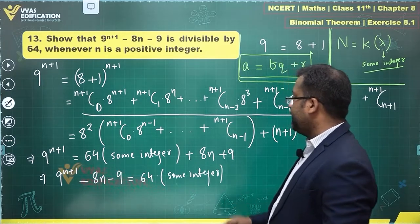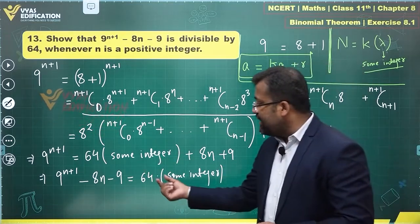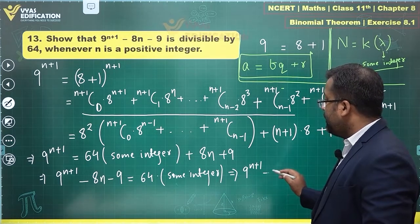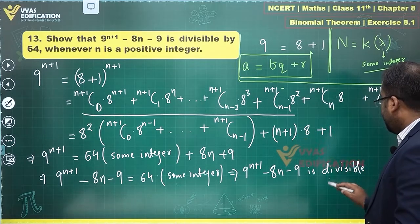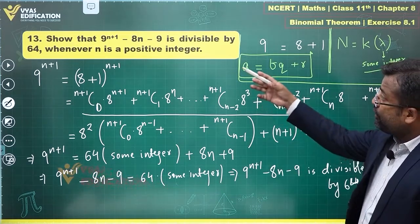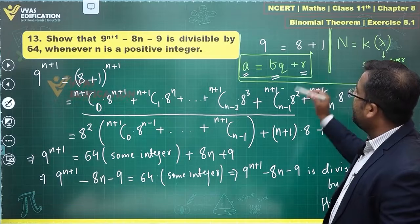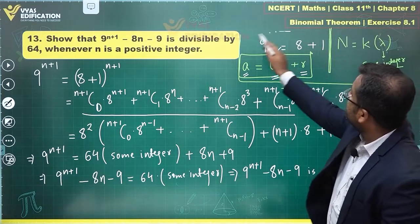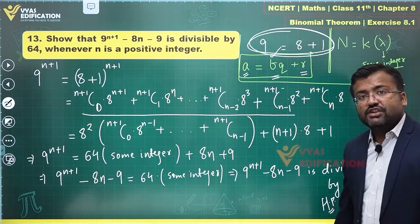So we have 9^(n+1) - 8n - 9 = 64 times some integer, which tells us that 9^(n+1) - 8n - 9 is divisible by 64. This is exactly what we wanted to prove. Since a = bq implies a is divisible by b, the proof is complete. The key step was writing 9 as (8+1) and applying the binomial theorem.